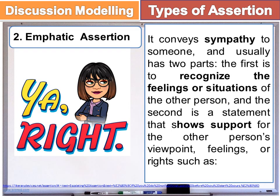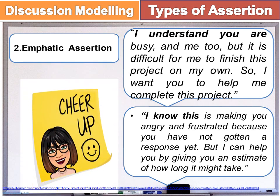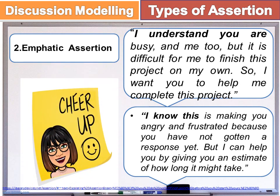Let's move on to number two: Emphatic Assertion. It conveys sympathy to someone and usually has two parts. The first is to recognize the feelings or situations of the other person, and the second is a statement that shows support for the other person's viewpoints, feelings, or rights. Such as: 'I understand you are busy and I am too, but it is difficult for me to finish this project on my own. So I want you to help me complete this project.'